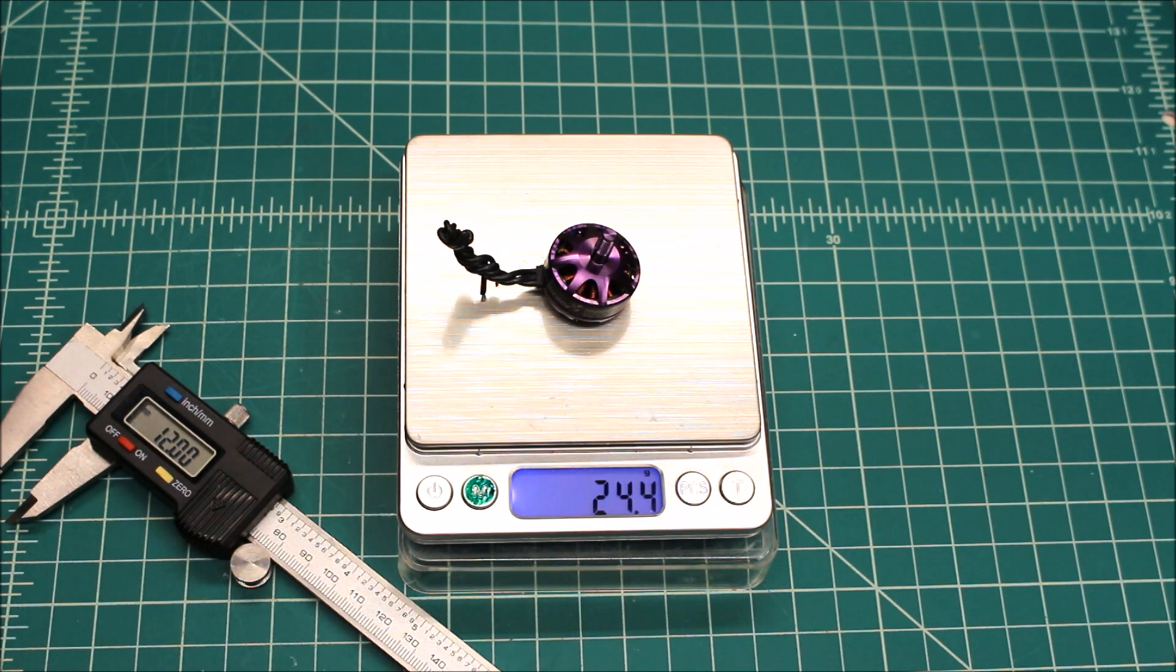I think one of the things we're going to find in the thrust test is that the efficiency of these is considerably higher. That's kind of why you would want to spend the extra money on a ceramic bearing—they spin more freely and therefore are more efficient.